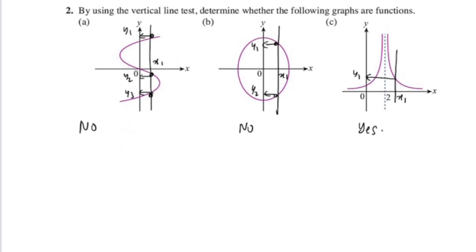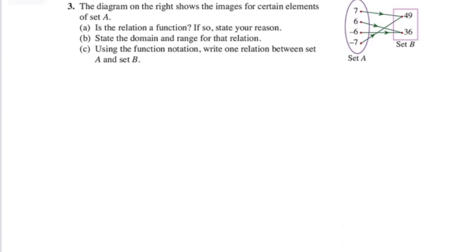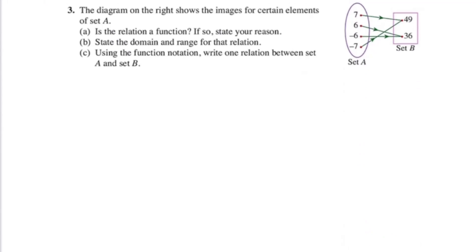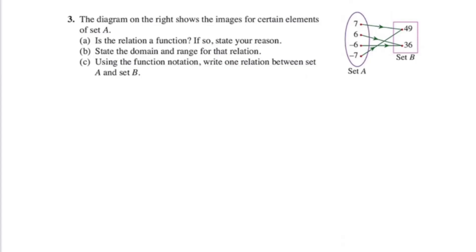Let's move on to number 3. The diagram on the right shows the images for certain elements of set A. Is the relation a function? State your reason. Let's look at 7. 7 maps onto 49, 6 maps onto 36, negative 6 also maps onto 36, negative 7 maps onto 49 again. So is this a relation? Everybody has only one image, so yes. Give a reason: every object has exactly one image.